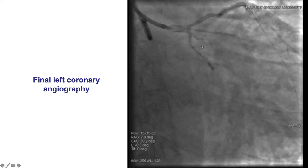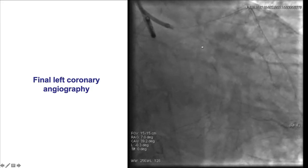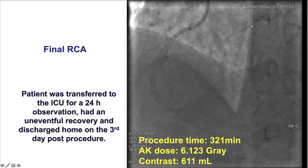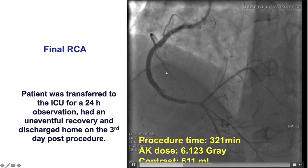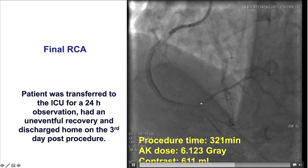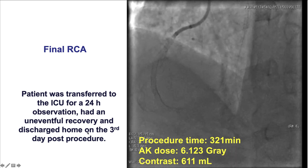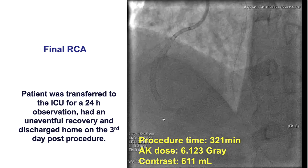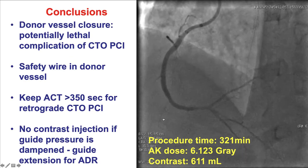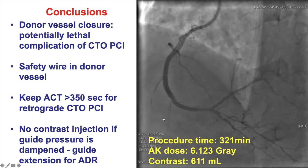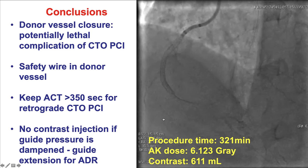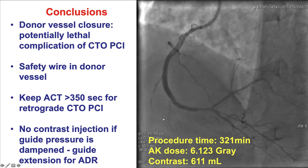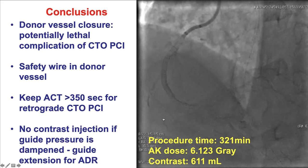The patient stabilized and a final nice result was achieved. There is good flow in both the LAD and the diagonal, as well as good flow into the right coronary artery. The patient had an uneventful post-procedural course and was subsequently discharged. This case illustrates one of the potentially catastrophic complications of CTO PCI: donor vessel occlusion or thrombosis.